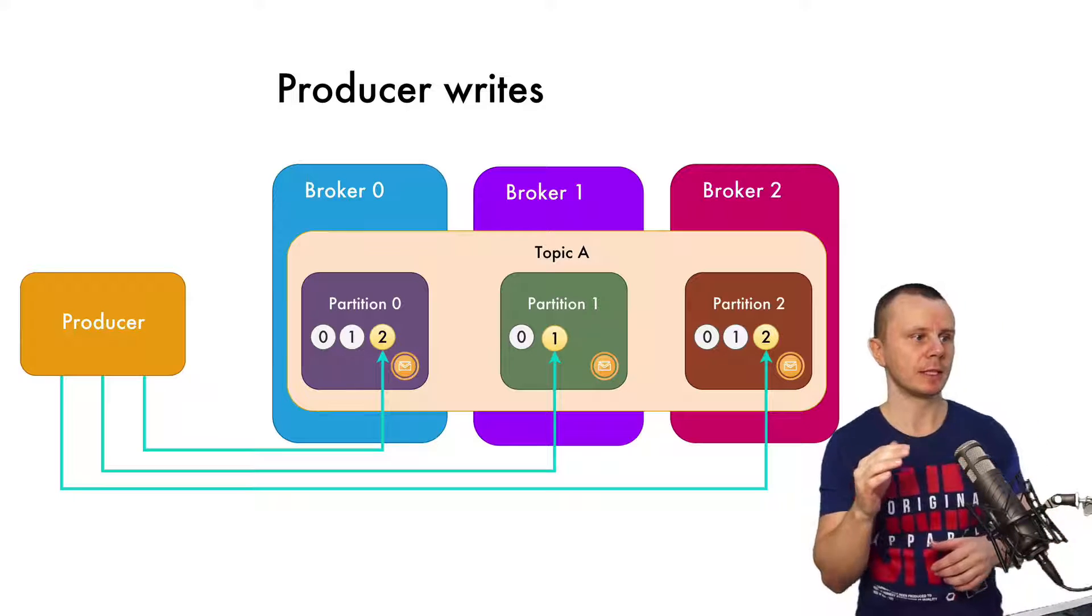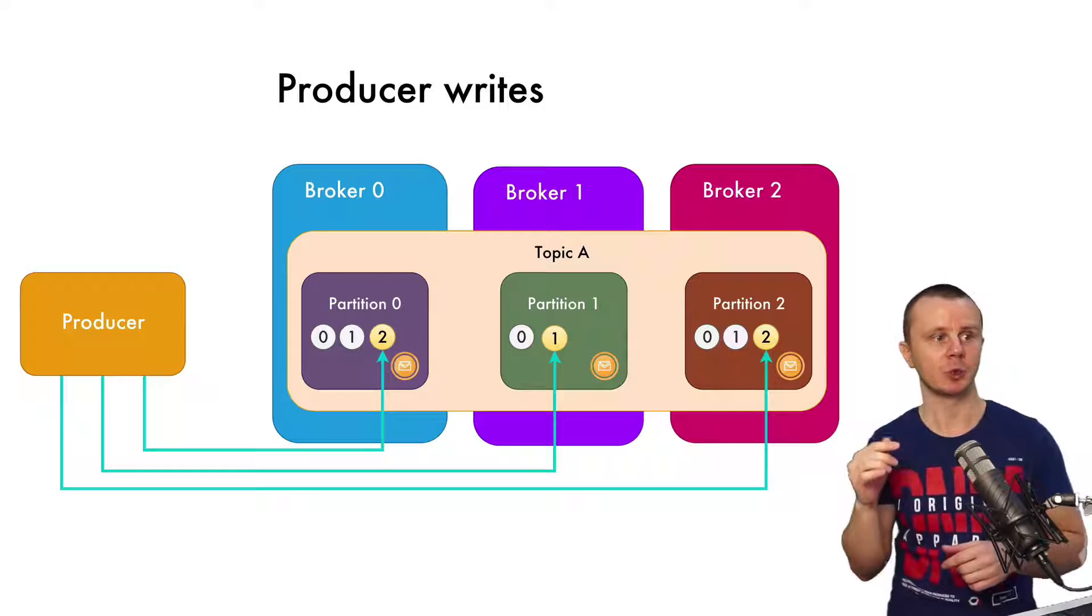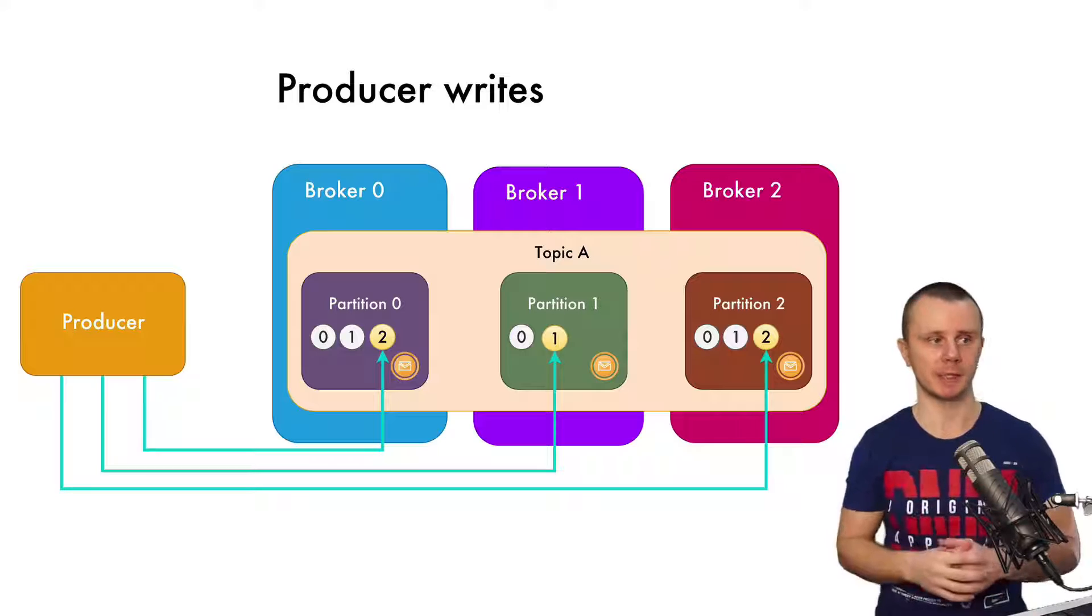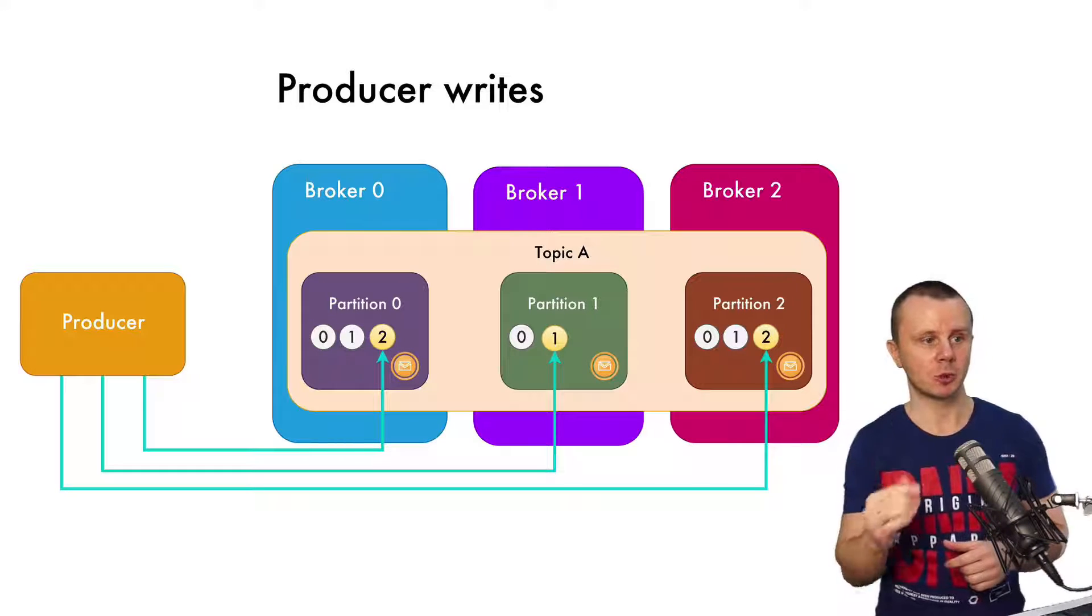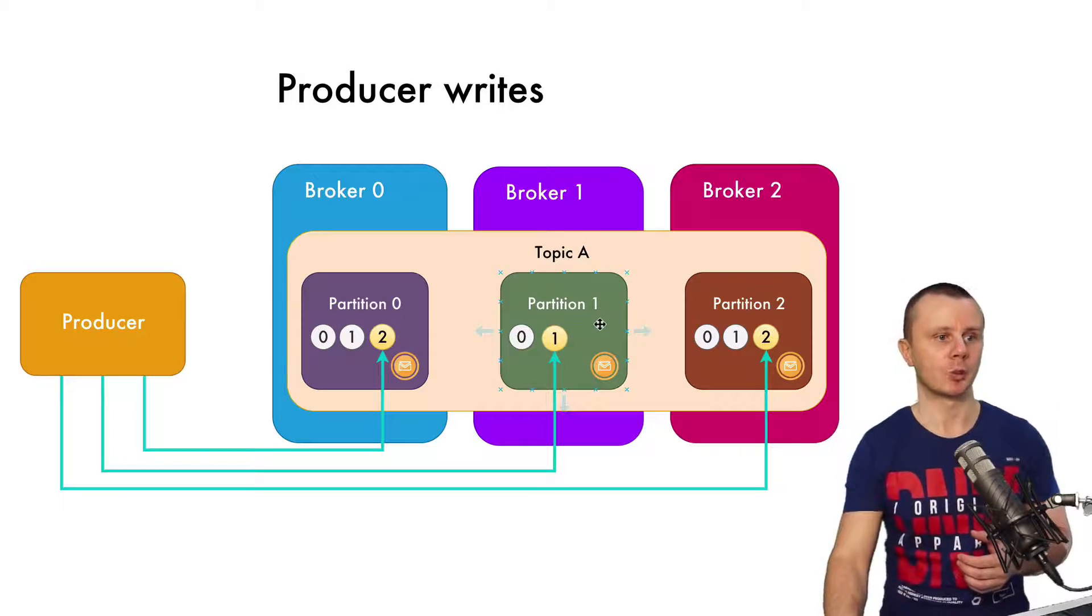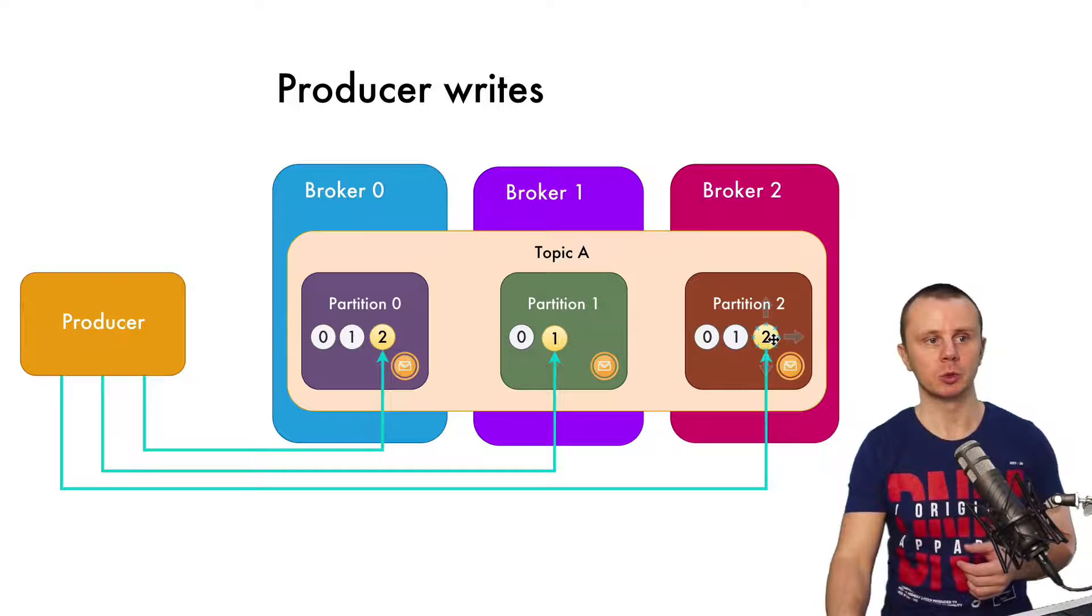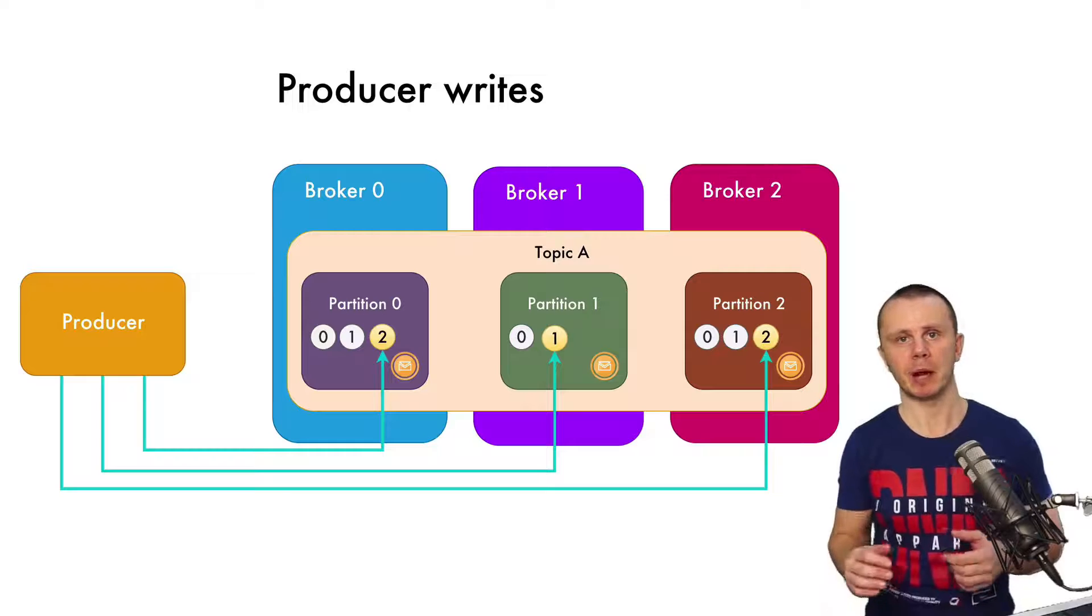In this diagram, you see that the producer writes a message with offset number two to partition zero, then it writes a message with offset number one to partition one, and it writes one more message with offset number two to partition two. That's perfectly acceptable.